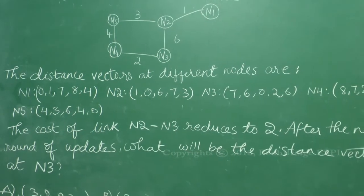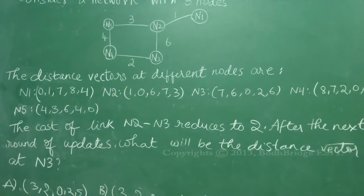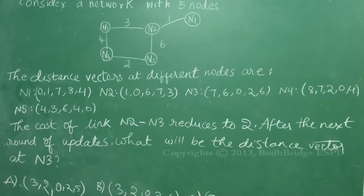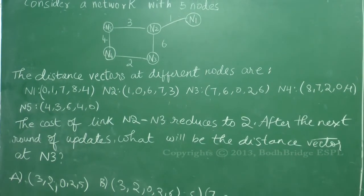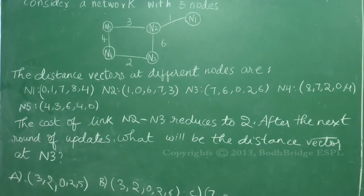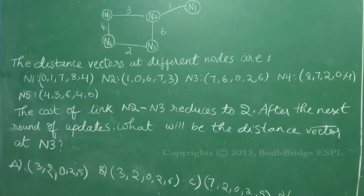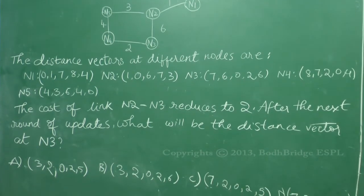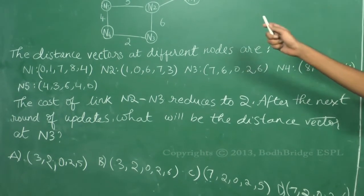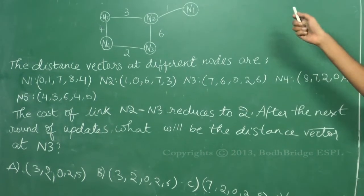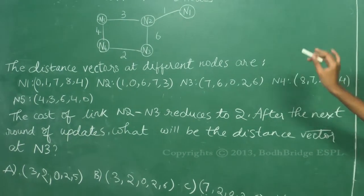N2 is 1, 0, 6, 7, 3. N3 is 7, 6, 0, 2, 6. N4 is 8, 7, 2, 0, 4 and N5 is 4, 3, 6, 4, 0. Basically, distance vectors are the best known distances between different nodes, and the distance from a node to itself is 0.